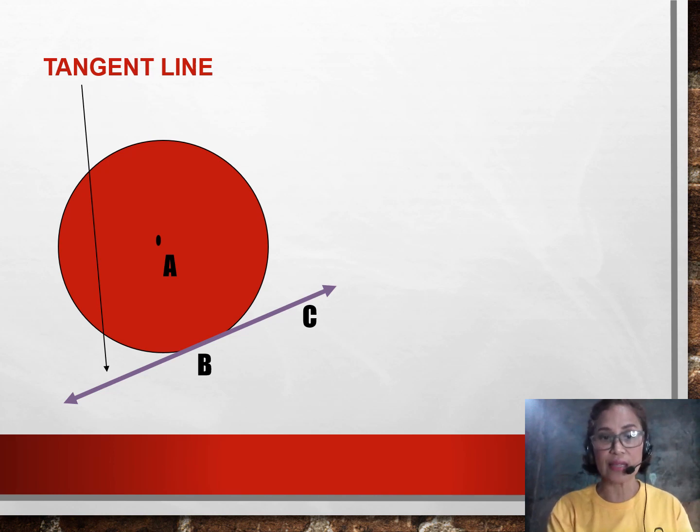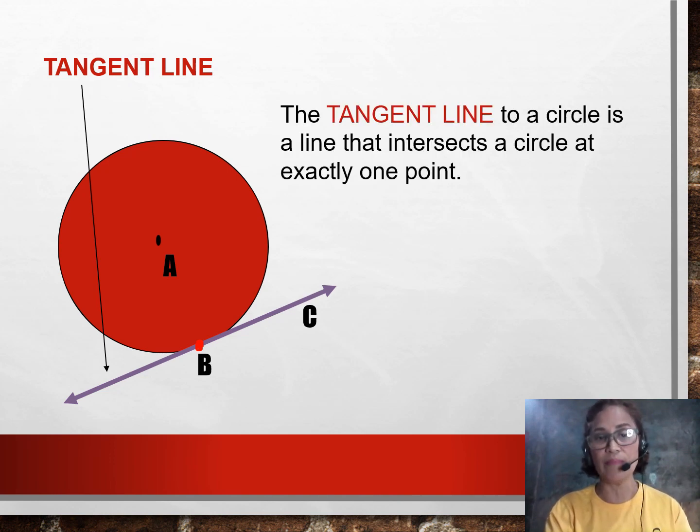Next is what we call as the tangent line. How is a tangent line different from a secant line? A tangent line touches the circle in exactly one point. Like, in my example, it touches point B of the circumference of circle A. A tangent line to a circle is the line that intersects the circle at exactly one point. To differentiate the tangent line to a secant line, it's very easy. Tangent means intersecting the circle in one point. Secant line is intersecting the circle in two points.